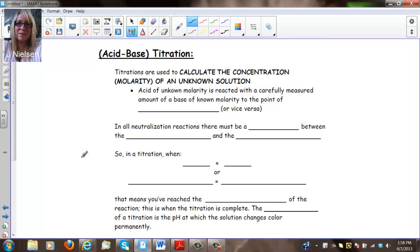In acid-base titration, we use known information about molarity and volume of one substance to calculate the concentration or the molarity of another unknown substance. An acid of unknown molarity is reacted with a carefully measured amount of base of known molarity to the point of neutralization.